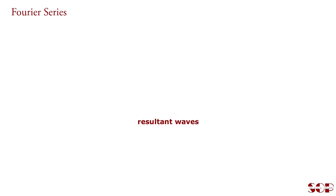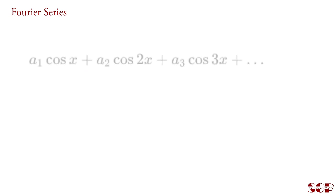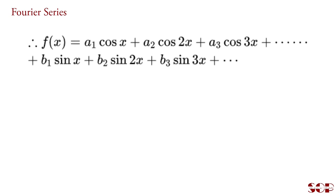Such resultant waves may contain sine waves only, some contain cosine waves only, and some contain both sine and cosine waves. If these waves are denoted as f, then f contains a large number of cosine and/or sine waves. They are written as: a1 cos x + a2 cos 2x + a3 cos 3x + ... and b1 sin x + b2 sin 2x + b3 sin 3x + ... Thus, the resultant series is written as f = a1 cos x + a2 cos 2x + a3 cos 3x + ... + b1 sin x + b2 sin 2x + b3 sin 3x + ...